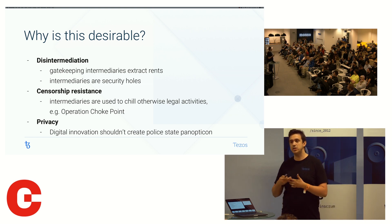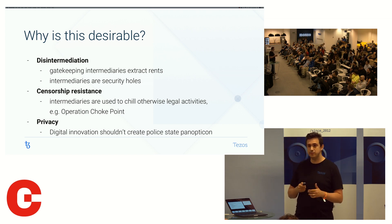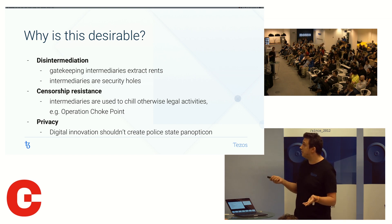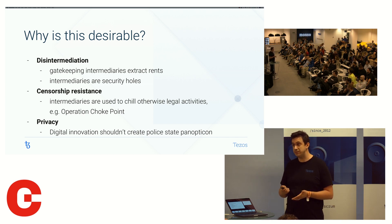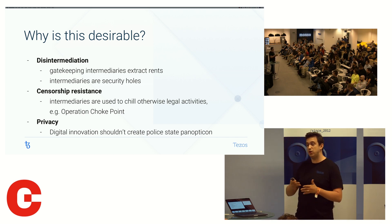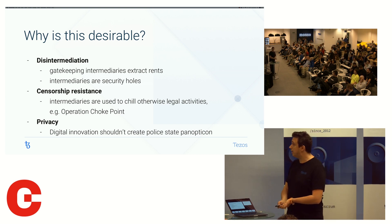It could be things like insurance, escrow, a lot of financial services that can be disintermediated. Why is that good? Because intermediaries can extract rents, especially in spaces where they have large moats around them, so it can be expensive to use them. They're also security holes.